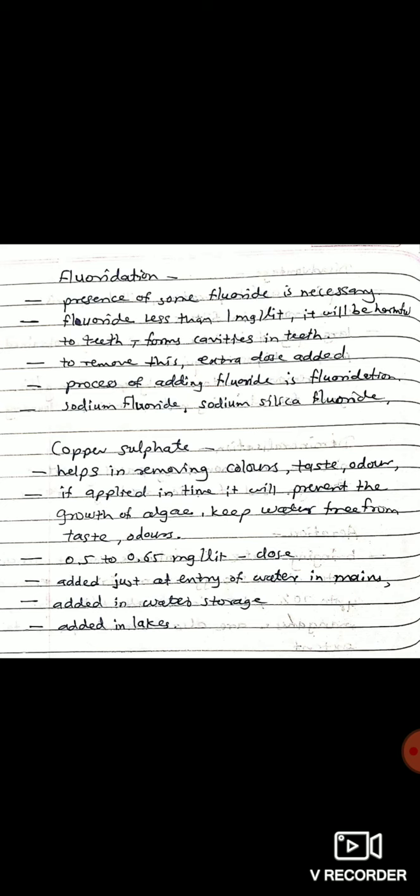The algae, if it gets time to grow and is killed after completing its life cycle, will produce oils and other decomposing products which will produce objectionable taste and foul odors in the water. If copper sulphate is added in time, it will prevent the growth of algae and will keep the water free from taste and odors.